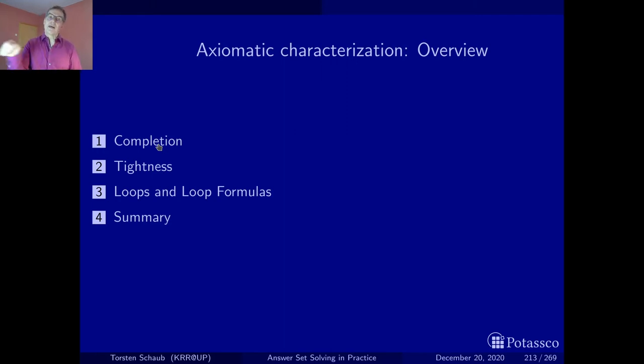So we ask ourselves, if we take a logic program and translate it into a formula, how does this formula have to look like so that its models, its classical models, give us all the stable models of the original program?